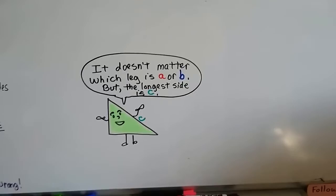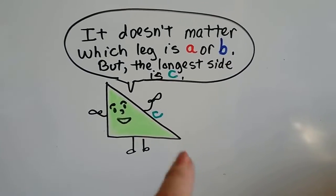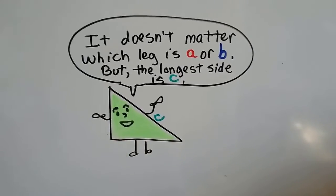Just remember, it doesn't matter which leg is a or b, but the longest side is c, the side opposite the right angle.